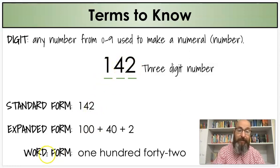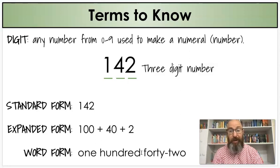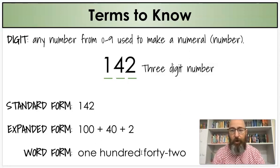And the third way to write a number is the word form. We're just going to write it in words instead of numbers, 142. If you notice, there's no and there. A lot of times I have students who want to put 100 and 42. Don't put an and. If you put an and, that means you're putting a decimal point, almost like dollars and cents.